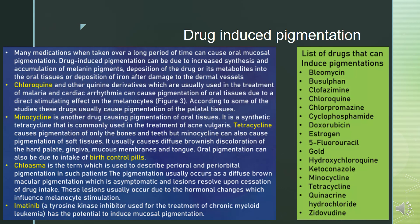Chloasma is the term used to describe perioral and periorbital pigmentation in such patients. The pigmentation usually occurs as a diffuse brown macular pigmentation, which is asymptomatic, and lesions resolve upon cessation of drug intake. These lesions occur due to hormonal changes which influence melanocyte stimulation. Imatinib, a tyrosine kinase inhibitor used for the treatment of chronic myeloid leukemia, has the potential to induce mucosal pigmentation.